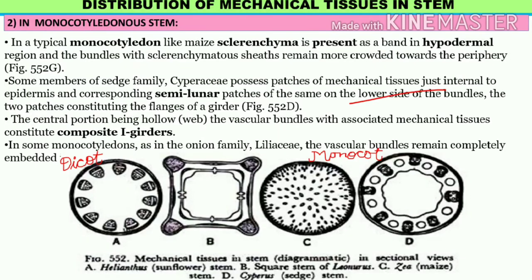Now, if we talk about monocots - in grasses, sclerenchyma is present as a band in the hypodermal region. Sclerenchyma cells are present just below the epidermis as a band in the hypodermis. There will be sclerenchyma sheath, and the vascular bundles are surrounded by sclerenchyma sheath so that they can provide more strength. Vascular bundles are more crowded towards the periphery than the central region, as can be seen in the diagram.